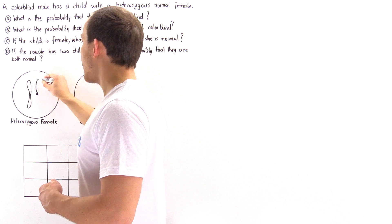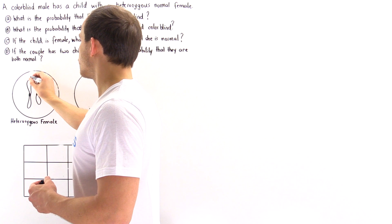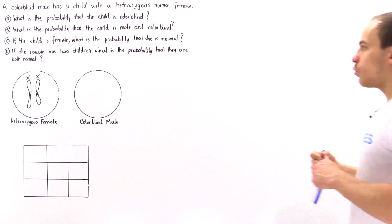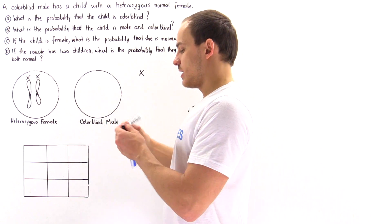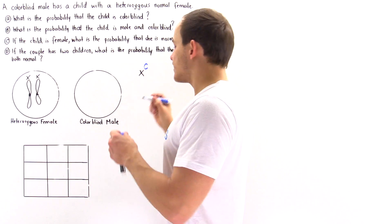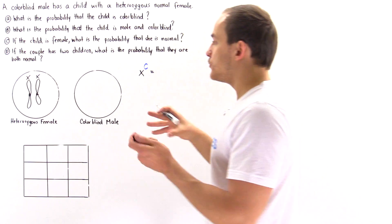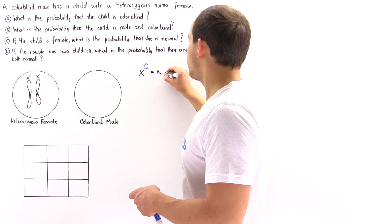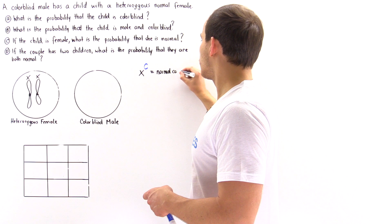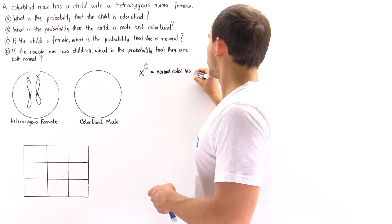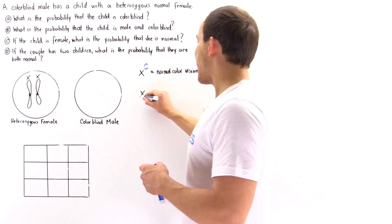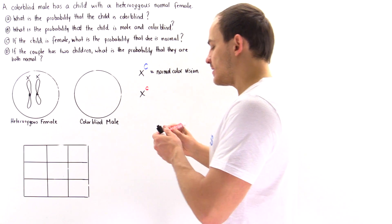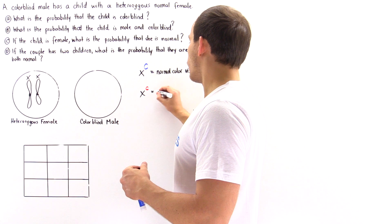We have the first X sex chromosome and the second X chromosome. We're going to use X with an uppercase C superscript to describe the gene found on the X chromosome that codes for normal color vision. On the other hand, we'll use X with a lowercase c superscript to describe the gene that codes for colorblindness.